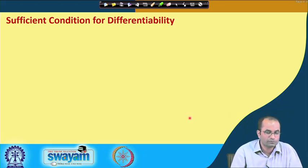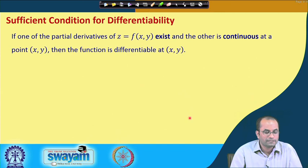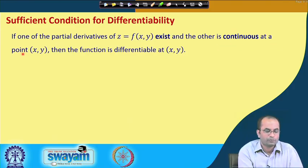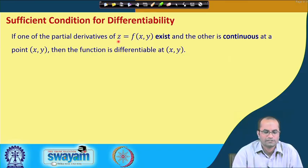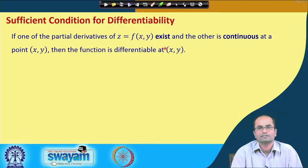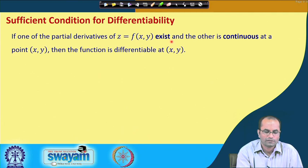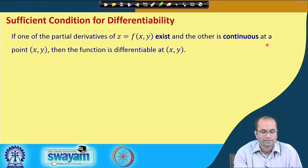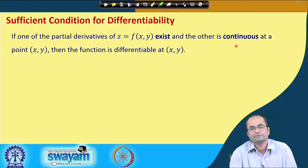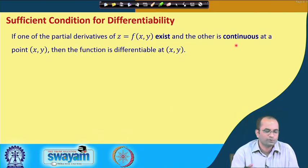Now we move to the sufficient conditions for differentiability. If one of the partial derivatives of z exists and the other is continuous at a point (x, y), then the function is differentiable at (x, y). Since existence of both partial derivatives is a necessary condition for differentiability, what essentially needs to be checked for the sufficient condition is that one partial derivative is continuous — this, combined with the existence of both, guarantees differentiability.